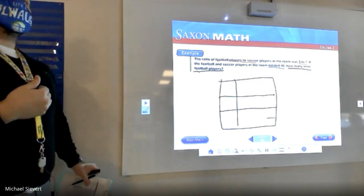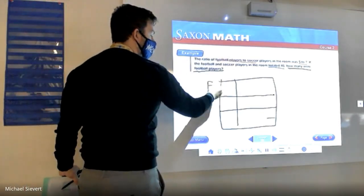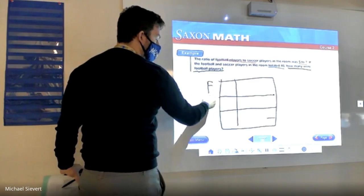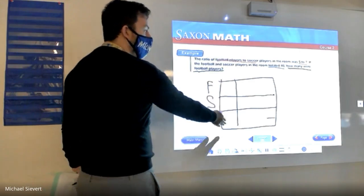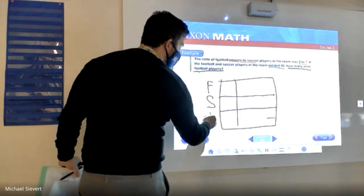I like to do it by how they ask it. So first they say football players, so the top part will be F for football. Soccer players, that's going to be the second square. And then you always need, since it says total, you always need the total.